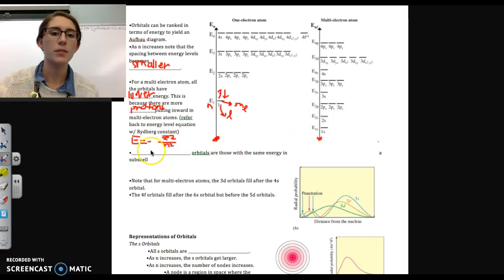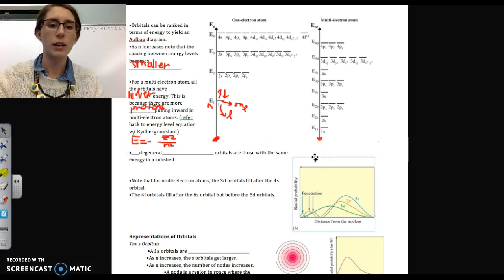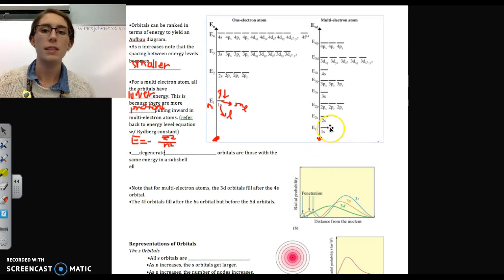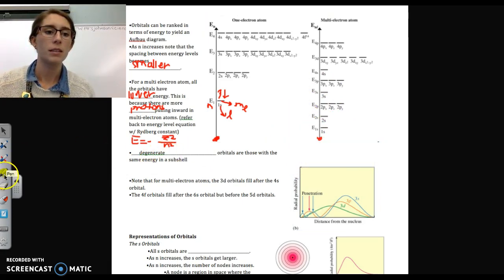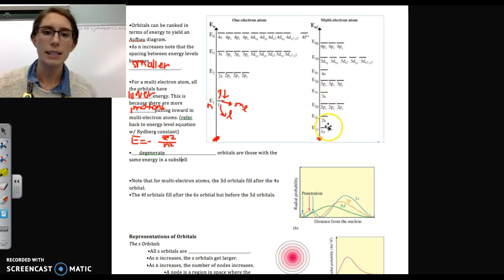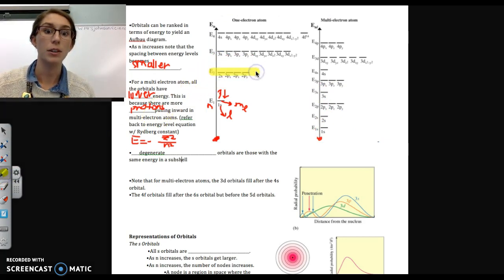And then one more piece of terminology that I want you to know is degenerate orbitals. So degenerate orbitals are orbitals within in the same principal energy level that have the same level of energy. So if we look at, let's say, in our one electron atom, everything in energy level 2 is at the same level. That means that they all have the same energy. So we would call these guys degenerate. So yes, for a one electron atom, the 2S, 2P, they are all degenerate, all have the same energy.